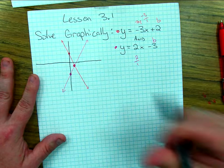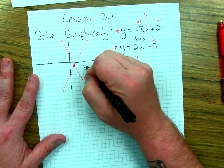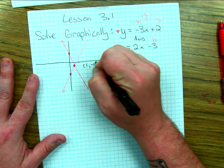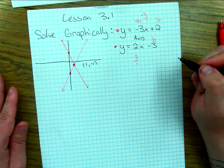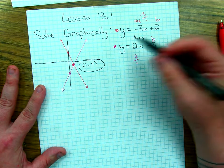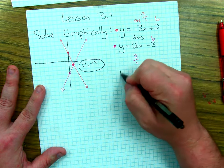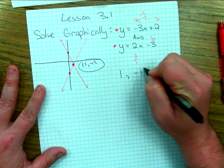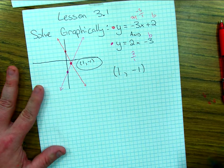And because we have an intersection there at the point right 1, down 1, or as we would call it, 1, negative 1, that's our actual answer. The answer to the system of equations you see here is 1, negative 1. And that's how we would write it exactly like that.